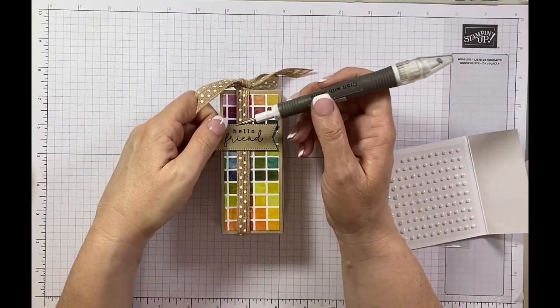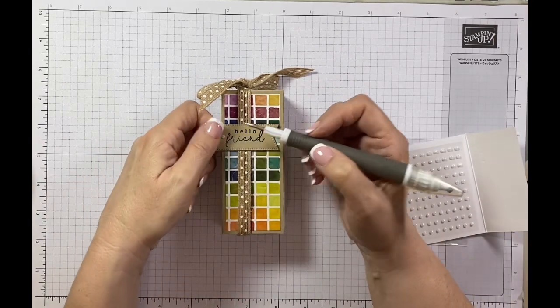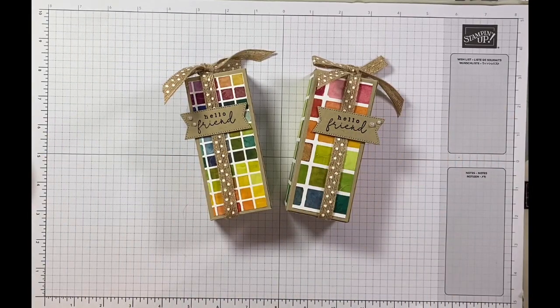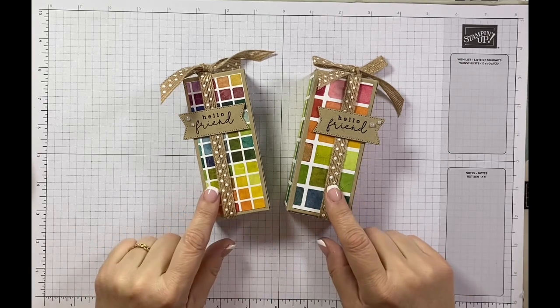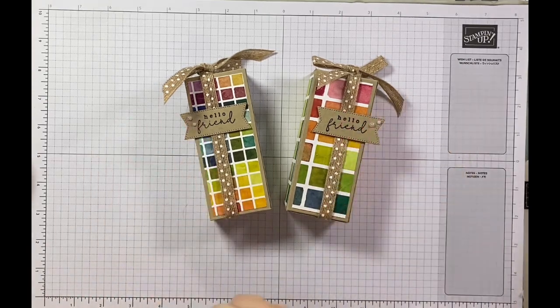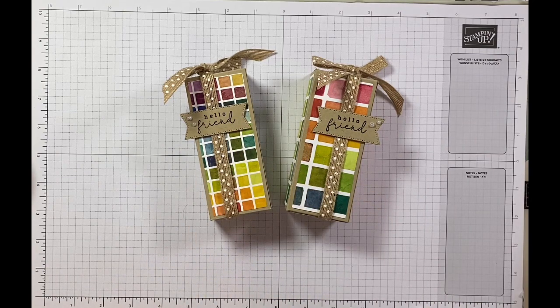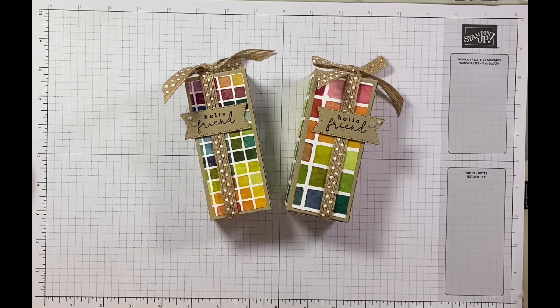These are my completed Bath and Body Works mini body wash gift boxes and I love them. I love this designer series paper, I think it really complements the Crumb Cake as well. This sentiment and the script is just beautiful. Definitely going to see lots more of that Country Birdhouse stamp set because I love it so much. It's got its own designer series paper that goes along with it, two sets, and it's gorgeous paper so I can't wait to share that with you.